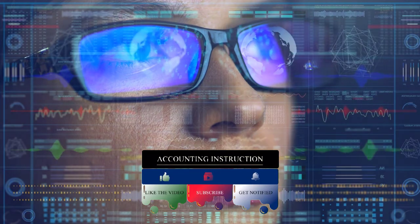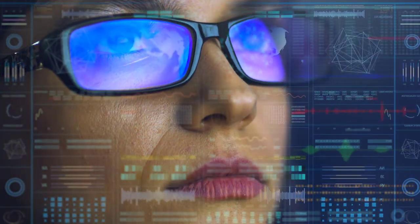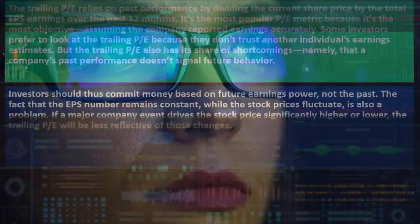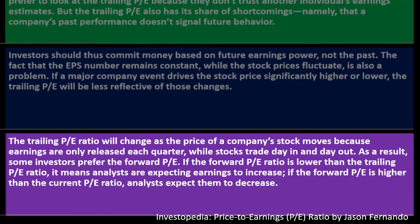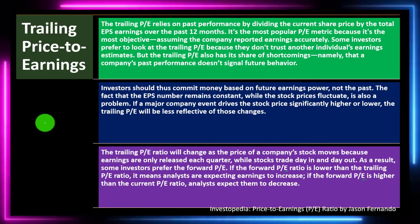Investors should commit money based on future earnings power, not the past. The fact that the earnings per share number remains constant while the stock price fluctuates is also a problem. If a major company event drives the stock price significantly higher or lower, the trailing PE will be less reflective of those changes. The trailing PE ratio will change as the stock price moves, because earnings are only released each quarter while stocks trade day in and day out.